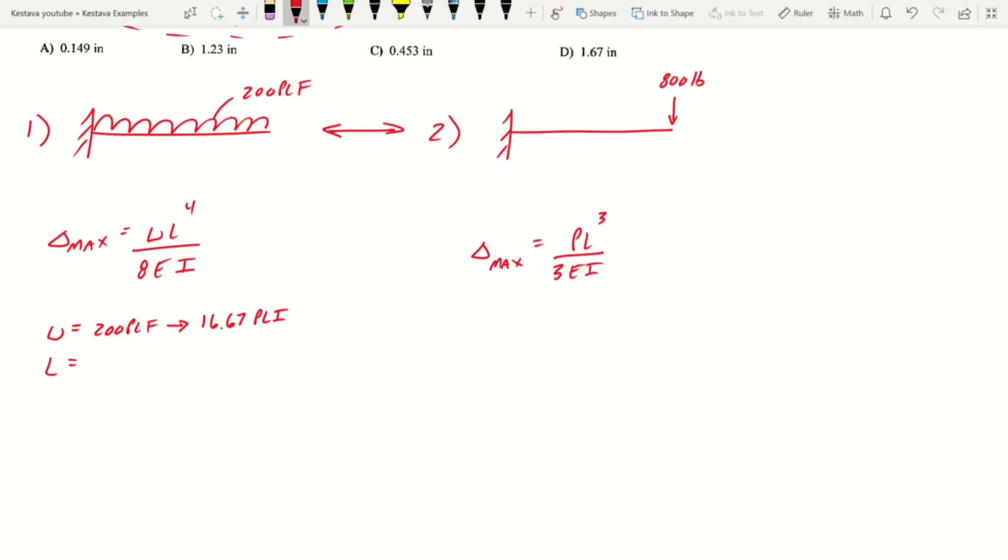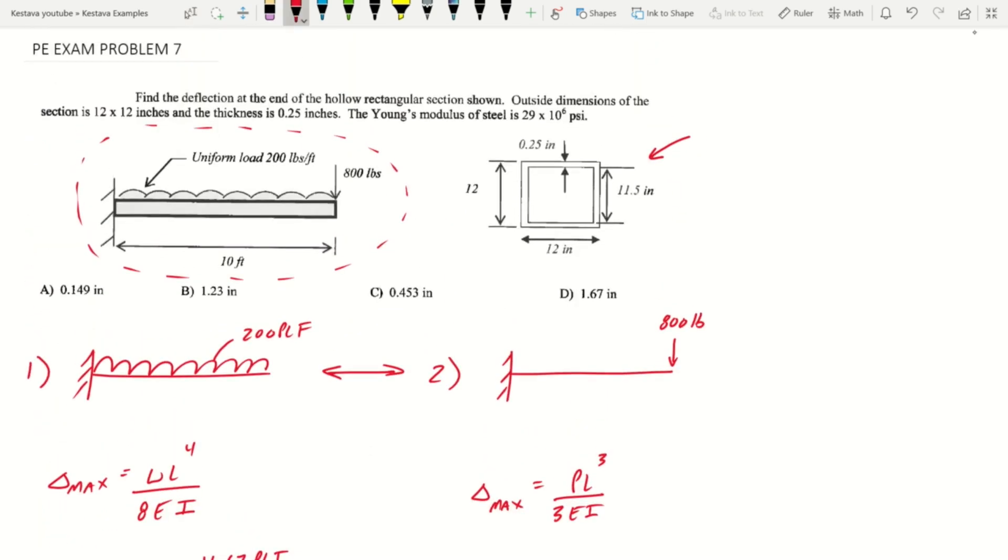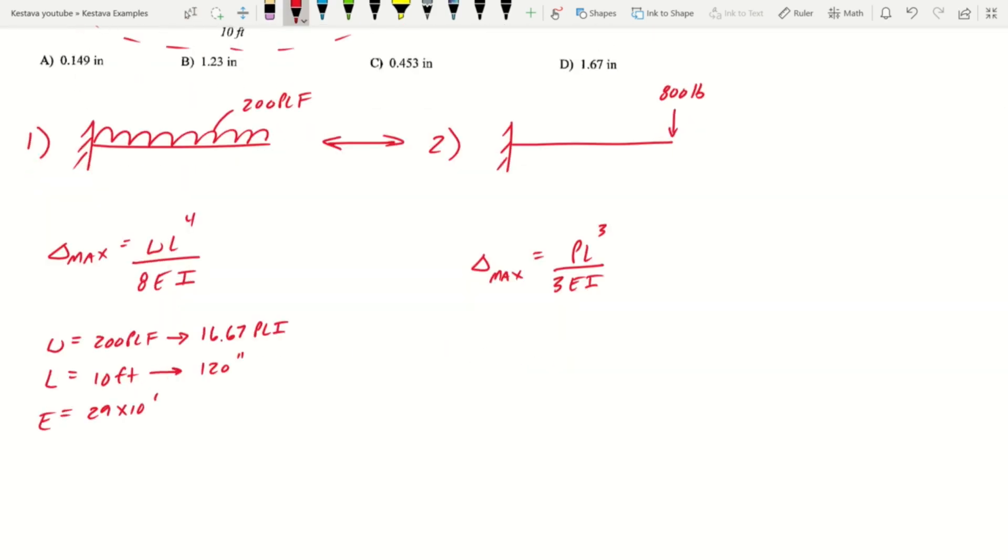L is the span, that's 10 feet, so 10 feet times 12 equals 120 inches. 8 is a constant. E was given to us above, Young's modulus of steel, it's 29 times 10 to the sixth psi.